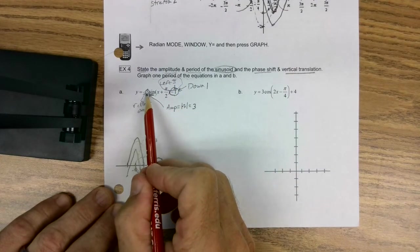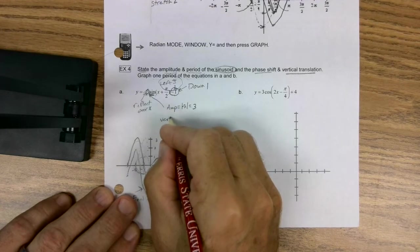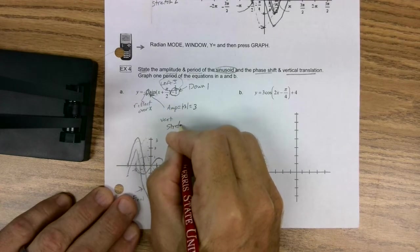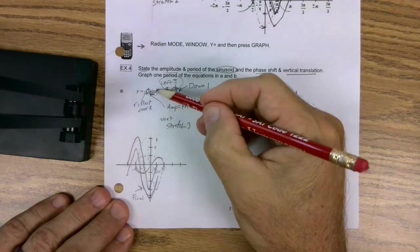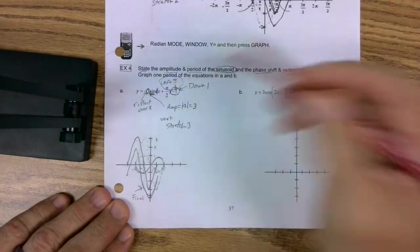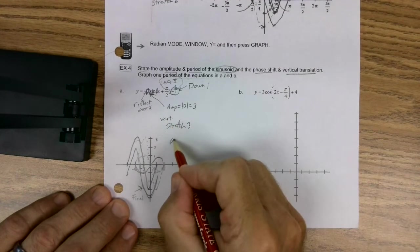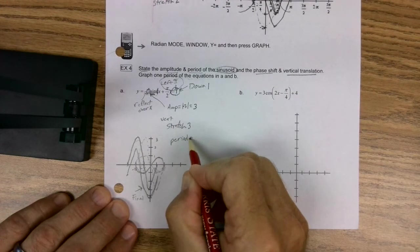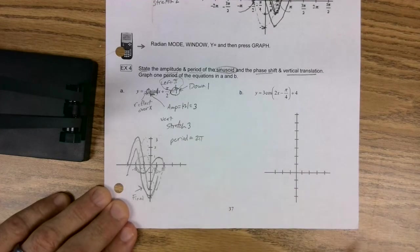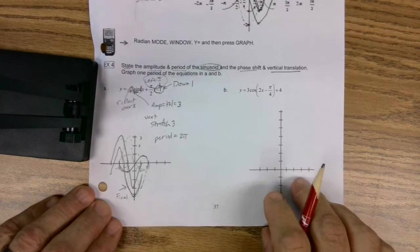Vertical translation is just down 1. Phase shift, left pi over 2. Amplitude, you know, we could say that was a vertical stretch factor of 3. And notice, our b is a 1. That means our period didn't change. Okay? So our period is just our foundational 2 pi. So we've completed that one. Last problem.